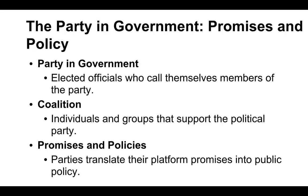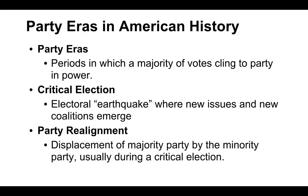Let's talk about party eras in history — periods in which a majority of voters cling to a party in power. A critical election is when there's an 'electoral earthquake' where new issues and new coalitions emerge, and we see the upturning of a party era, where one party gains power over another. We also see party realignment — the displacement of a majority party by the minority party — which usually happens during a critical election.